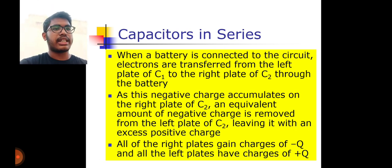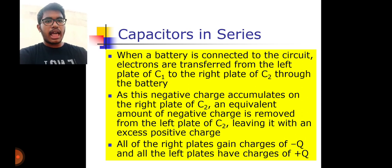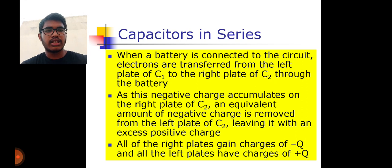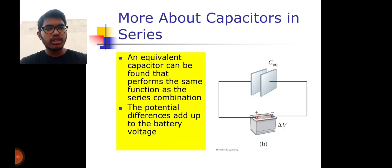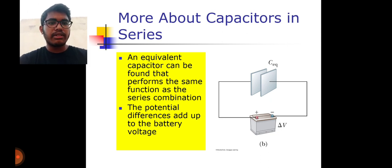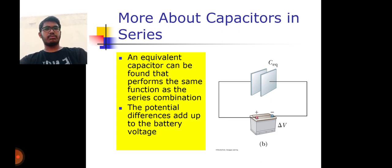When the battery is connected in a series circuit, electrons are transferred from the left plate to the right plate through the battery. As negative charge accumulates on the right plate of C2, an equivalent amount of negative charge is removed from the left plate of C2, leaving it with excess positive charge. All right plates gain charge of minus Q and all left plates gain charge of plus Q. The potential difference is different across each capacitor in series.